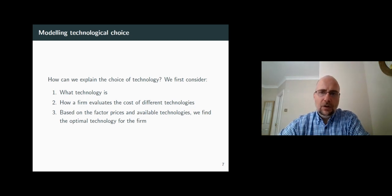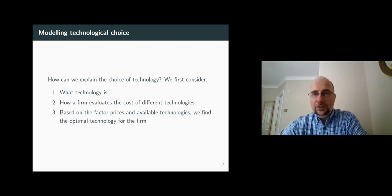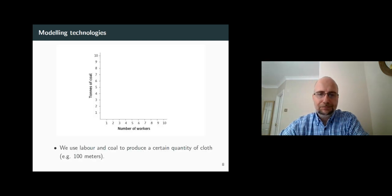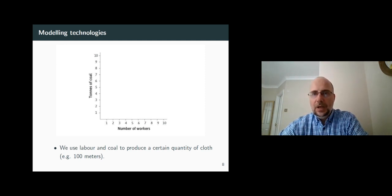Finally, you know how much each technology costs. The only thing you still need to do is to make an important choice. You choose the cheapest available technology to get a certain output. How does this logic look on a graph? So, here's a graph telling you that you can combine labor and coal to produce a certain output. Let's say your business is textiles and your goal is to produce 100 meters of cloth. This graph will illustrate a variety of methods you can use to achieve this goal.